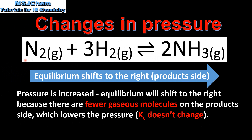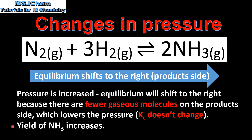Let's look at the effect of increasing the pressure on this system at equilibrium. When pressure is increased, the equilibrium will shift to the right because there are fewer gaseous molecules on the product side, which lowers the pressure of the system. By changing the pressure of the system the value of Kc does not change. If the equilibrium shifts to the right, then the yield of ammonia will increase.